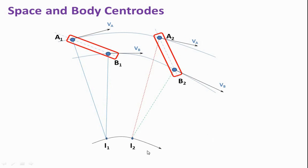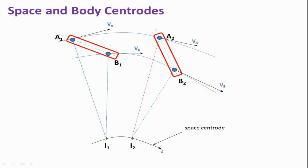Similarly, if we locate the instantaneous center for the third position, it comes somewhere further along, and the curve connecting every instantaneous center is the space centroid — the locus of all instantaneous centers. When link A2 B2 moves to the third position A3 B3, we get a third instantaneous center I3. This curve is nothing but the space centroid.